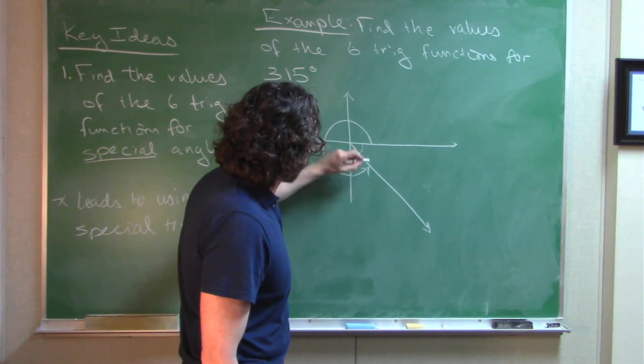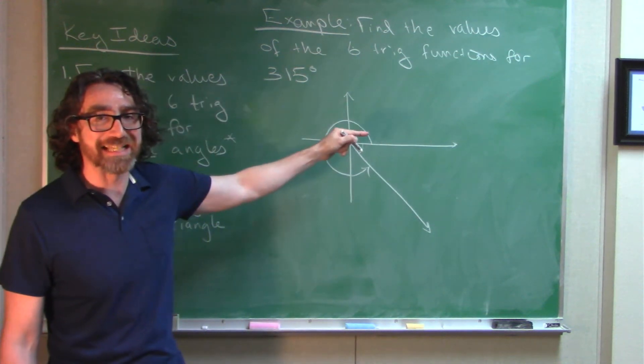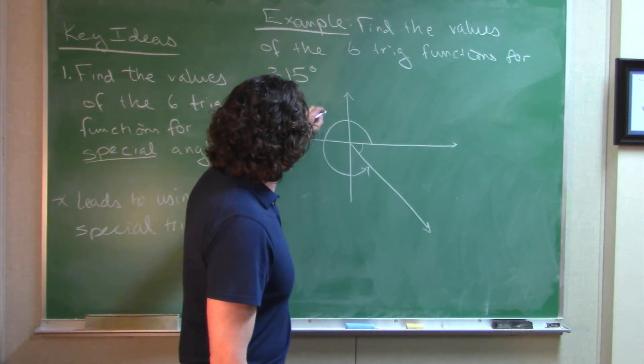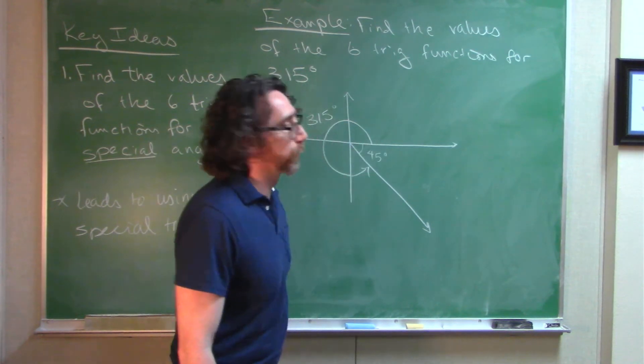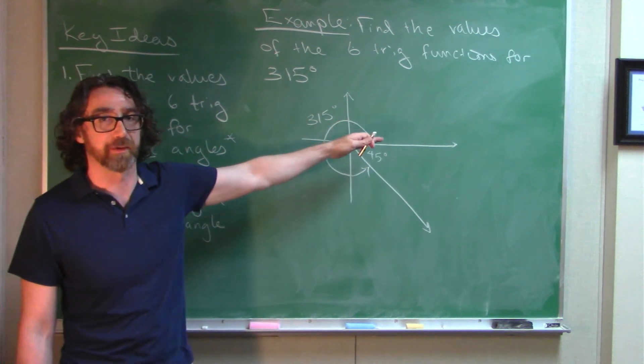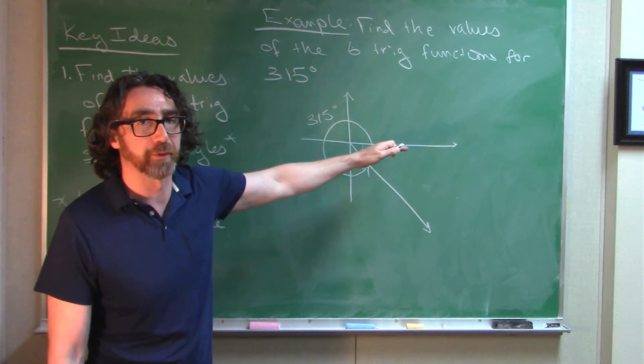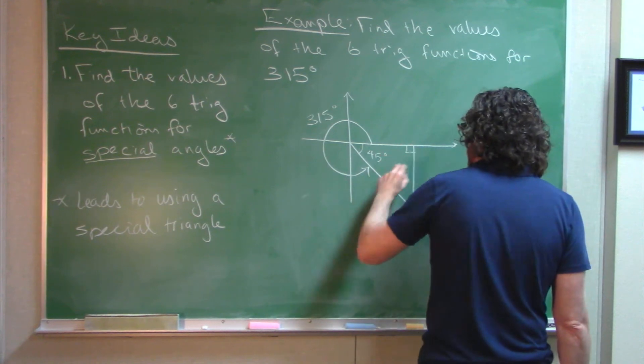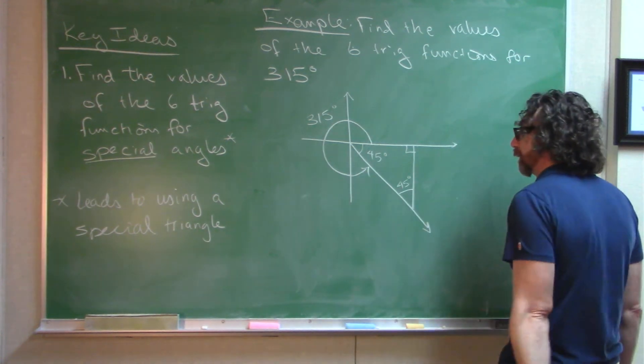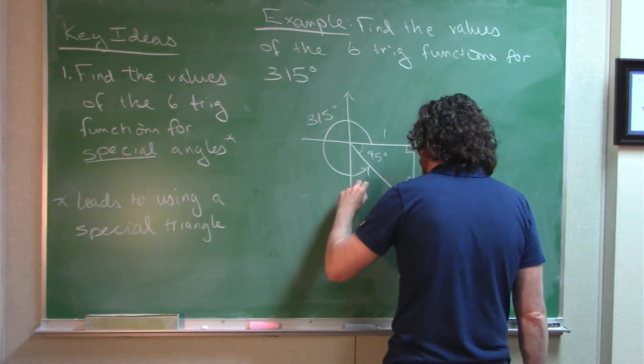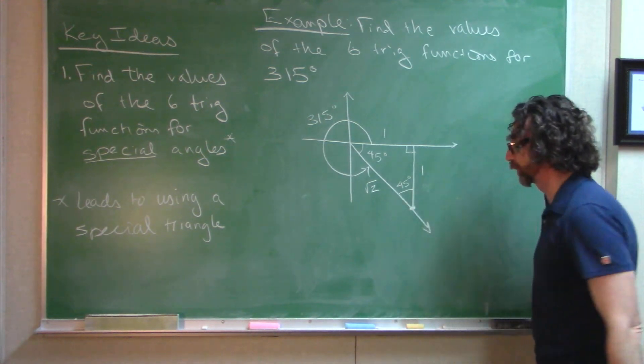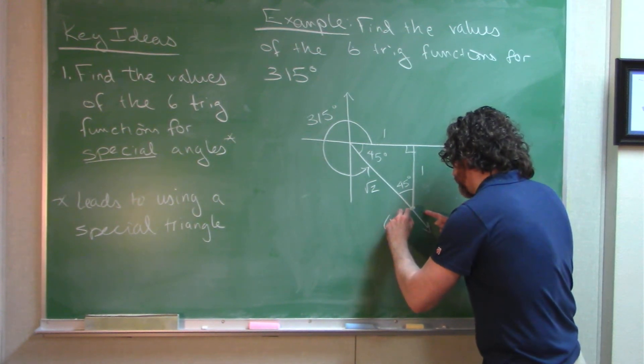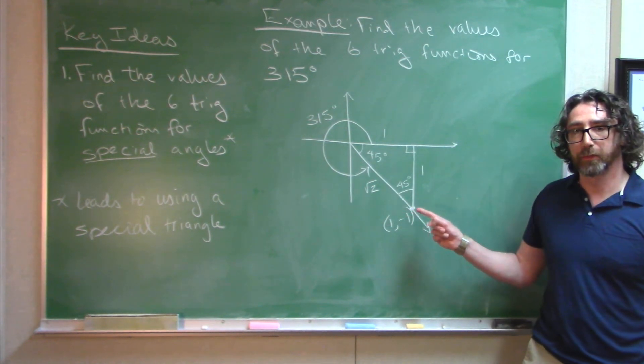So 315 is putting me here in the fourth quadrant. When I'm making my triangle, I've got to think about going to the closest portion of the x-axis. I'm always going to the x-axis. Now, if this is 315 degrees, that's 45 degrees. There's 45 degrees left to get back to that full 360 rotation. So we're going to throw in a special triangle right here. 45, that's a 45. 1, 1, and radical 2. The hypotenuse is radical 2.